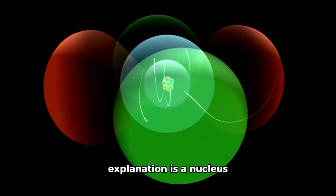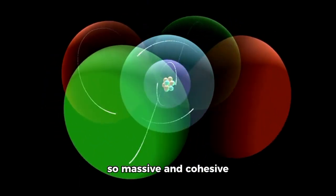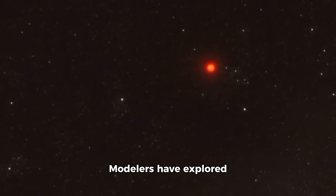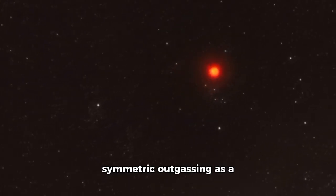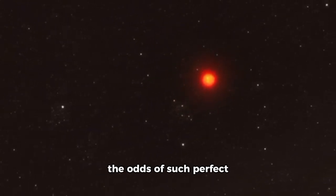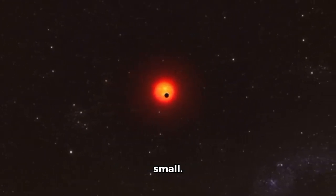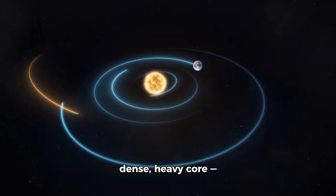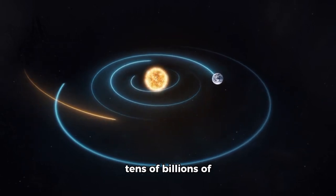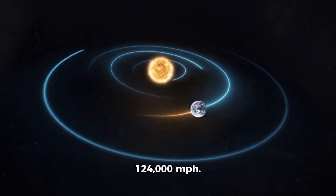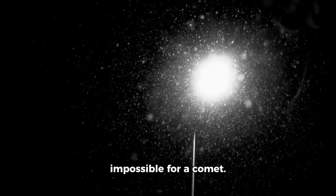The only plausible explanation is a nucleus so massive and cohesive that even the strongest jets can't move it. Modelers have explored symmetric outgassing as a balancing mechanism, but the odds of such perfect alignment are vanishingly small. The figures require a dense, heavy core, tens of billions of tons, crossing the solar system at 124,000 miles per hour. Such stability is nearly impossible for a comet.